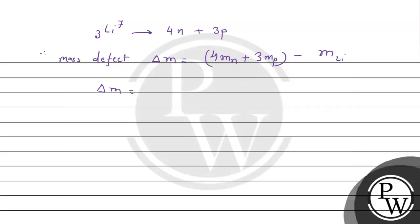Δm equals, putting the values: 4 times 1.00898 plus 3 times 1.00759 minus 7.0163. These are the given values for neutron mass, proton mass, and lithium mass. Calculating this, Δm equals 0.04216 atomic mass units.